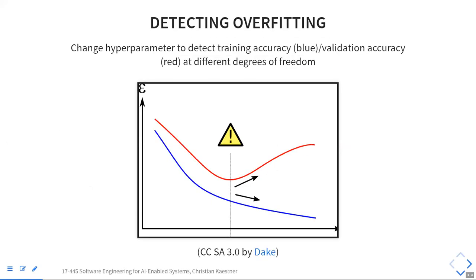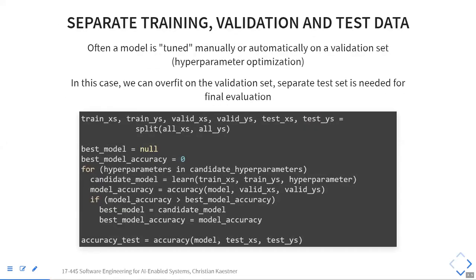We talked about overfitting, and to detect it you split into a training set and a validation set. You separately evaluate accuracy on both, and if at some threshold the model performs better and better on the training set but less well on the validation set, that means it's overfitting. This is the typical way to detect overfitting or decide when to stop training.